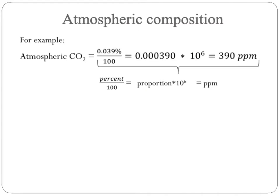Here's an example. We've got atmospheric carbon dioxide shown as a percentage: 0.039% of the atmosphere. We can turn that into the number of molecules of carbon dioxide per million molecules of air by dividing by 100 and then multiplying that proportion times a million. That tells us there are 390 carbon dioxide molecules for every million air molecules — or 390 parts per million — which are the units we're used to thinking about for atmospheric CO₂.